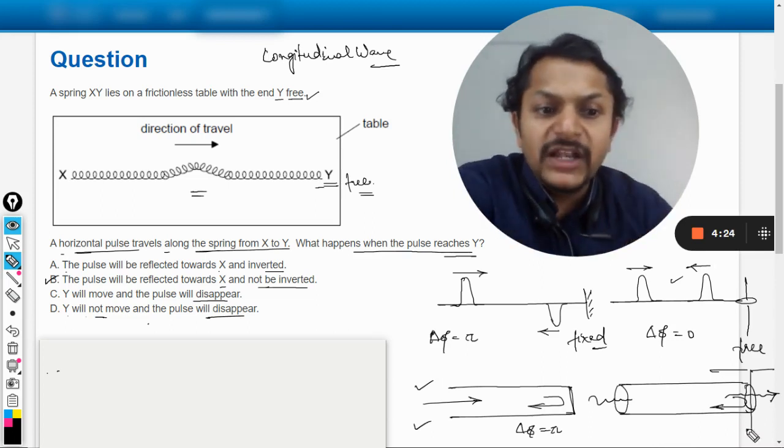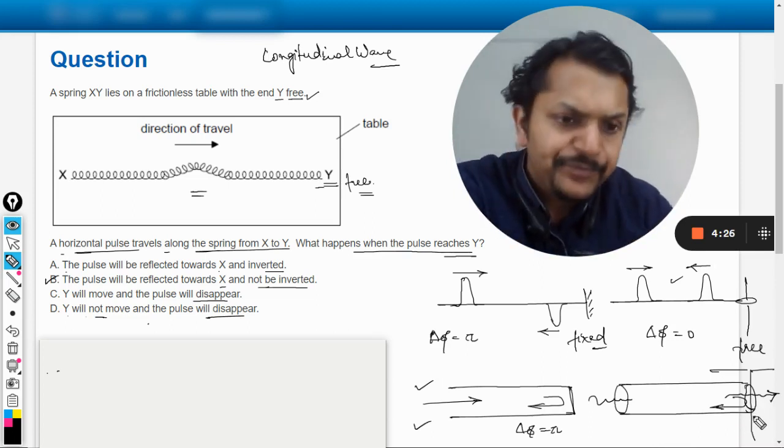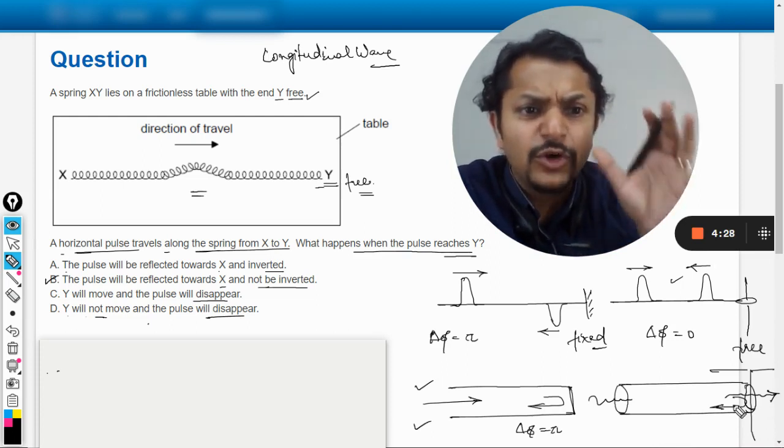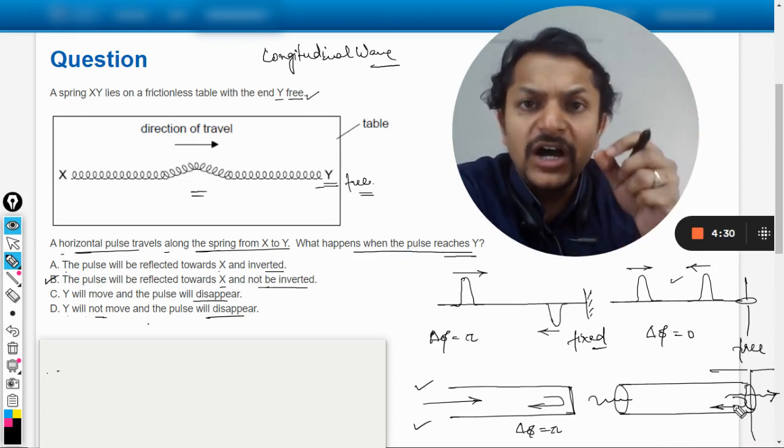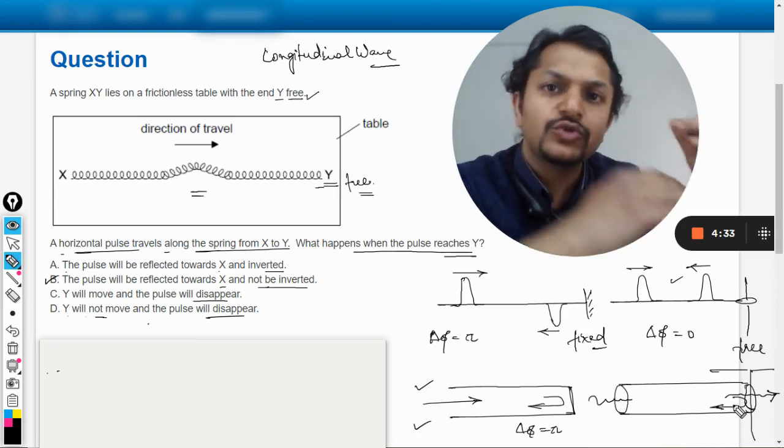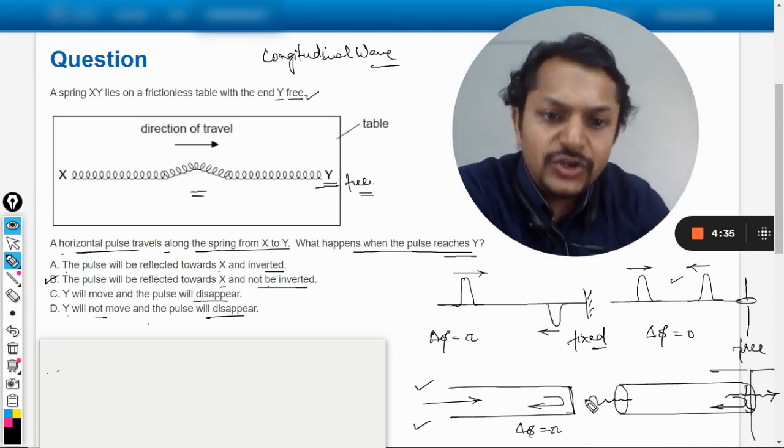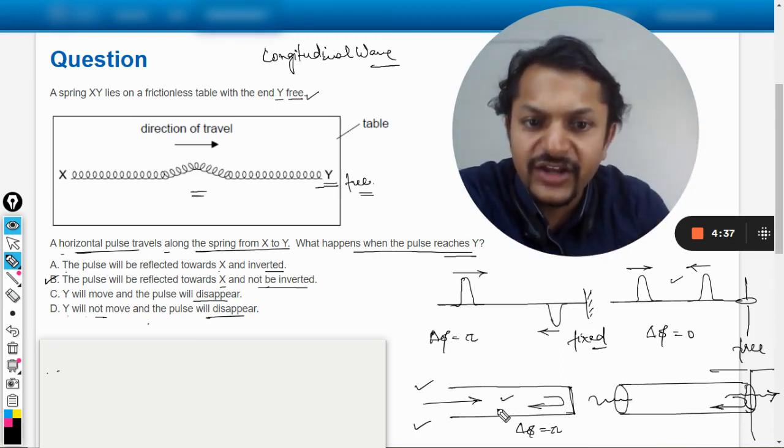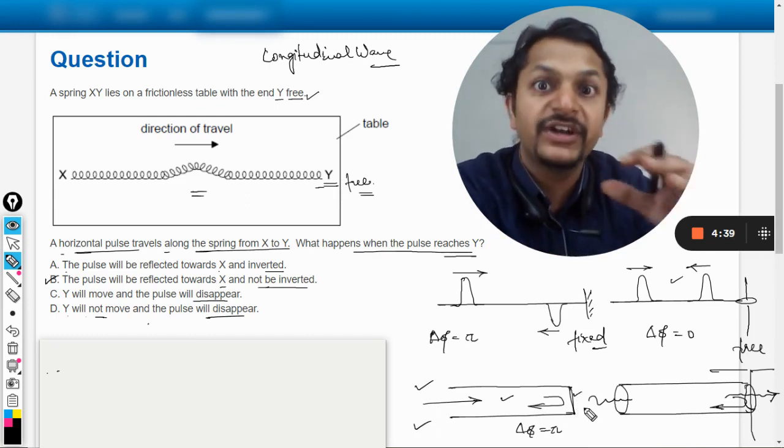Now you might ask me, why is this reflection happening? My dear students, because when we talk about the longitudinal waves, the rarer medium and the denser medium, these two things are treated as different. So in this case I can say that this is the rarer medium and this wall will be treated as the denser medium.